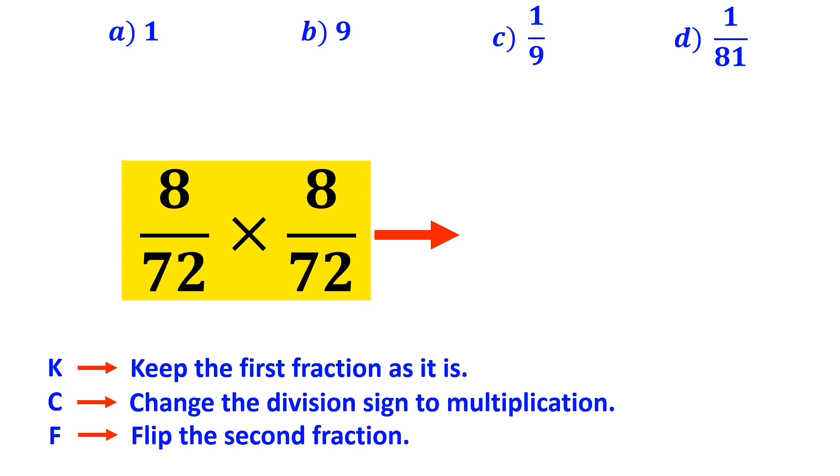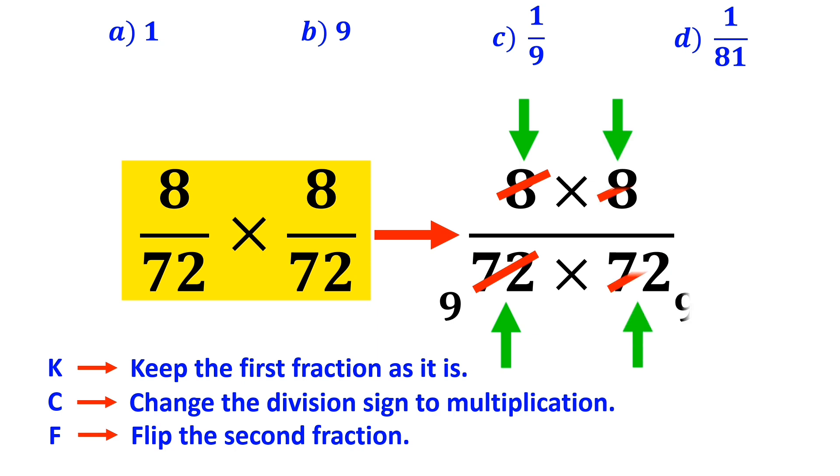Alright, now we can rewrite this fraction as follows: 8 times 8 over 72 times 72. As you can see in the image, these two numbers in the numerator and the denominator of this fraction cancel each other out. And these other two numbers also cancel out with each other.